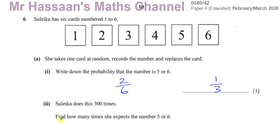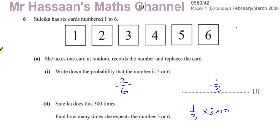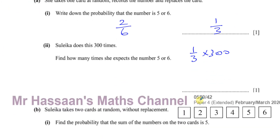Then it says Suleika does this 300 times — find how many times she expects the number five or six. One third of the time she's going to expect five or six, so one third of 300 is 100. So it's 100 times. Pretty simple so far.